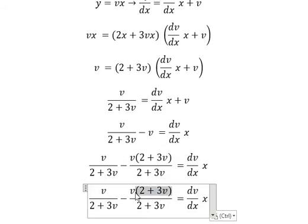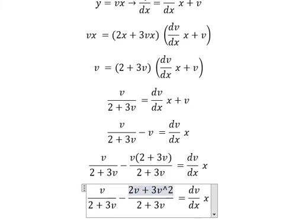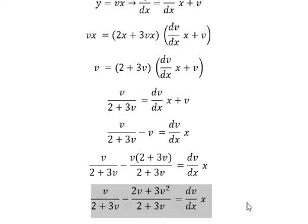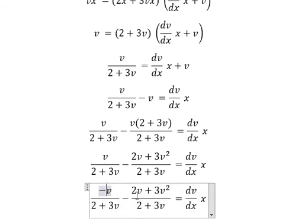This one, we will have 2v plus 3v square. v minus 2v, we have negative v. Negative with 3v square, we have negative 3v square.